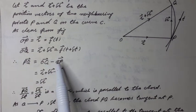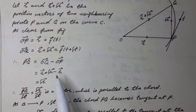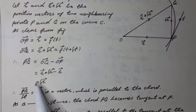Substituting, R vector cancels with R vector. We have PQ vector equal to delta R vector.